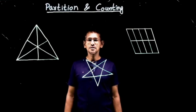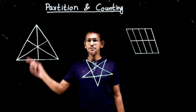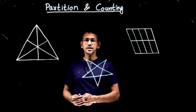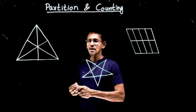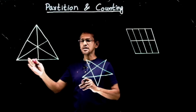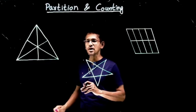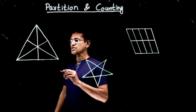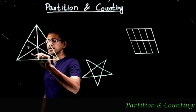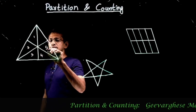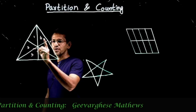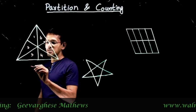Welcome back to The Wallet. This is the second video on figure partition and counting. We have a triangle ready right here, and we'll take a look at how many triangles are in this triangle. At a glance, we can see one, two, three, four, five, six triangles.